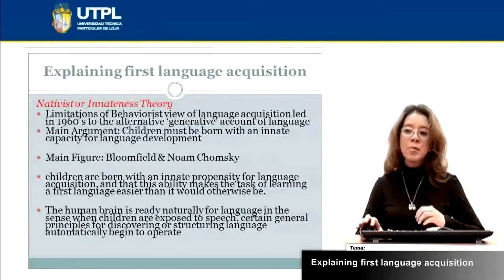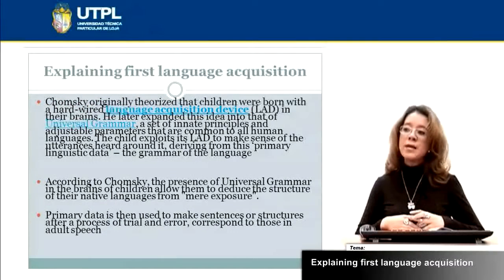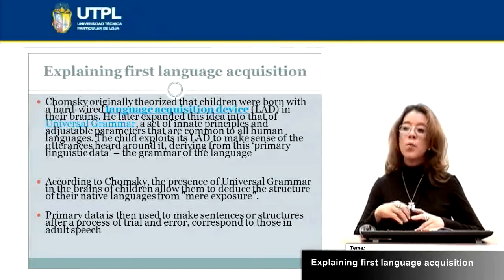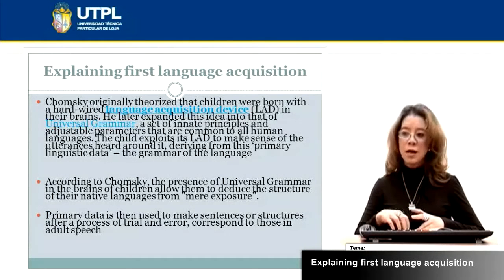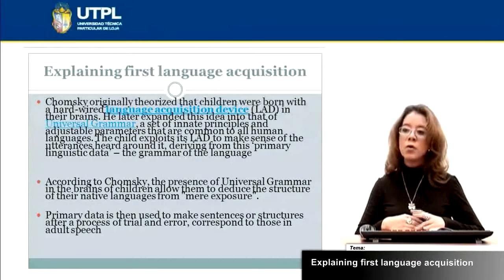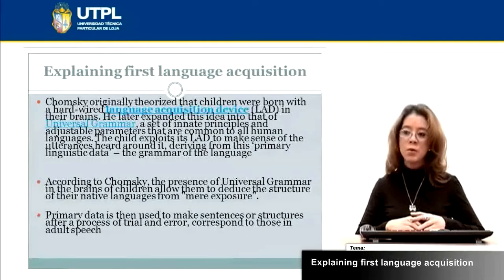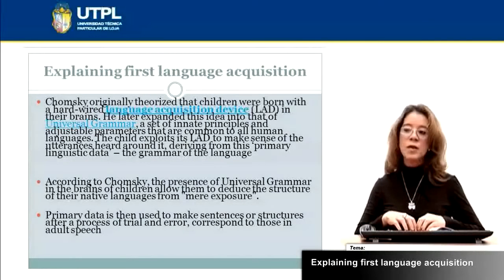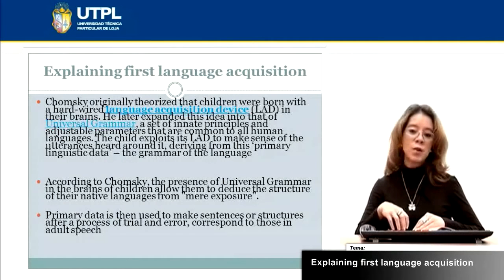We are born with an innate capacity for language development. Chomsky theorized the Language Acquisition Device in terms of the brain. He says that we are born with a universal grammar — the principles and parameters that all human languages have. Children exploit this Language Acquisition Device to make sense of the utterances heard around them. According to Chomsky, the principles of universal grammar allow children to deduce the structure of their native language from mere exposure.